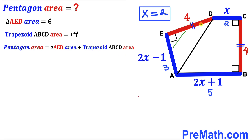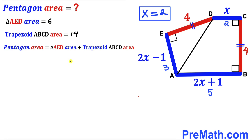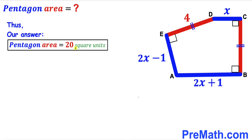Finally, the pentagon area = triangle AED area + trapezoid ABCD area = 6 + 14 = 20 square units. After all calculations, the area of this pentagon is 20 square units — that's our final answer. Thanks for watching and please subscribe for more exciting videos.